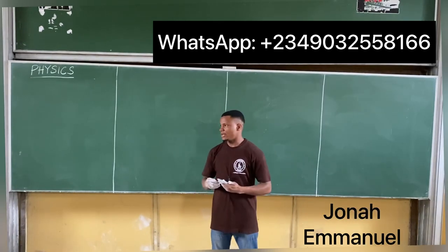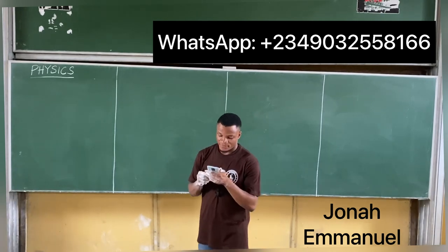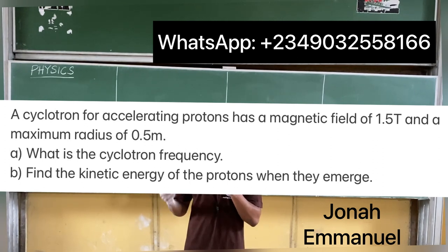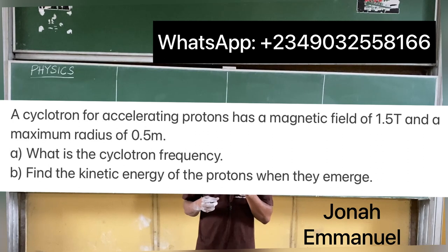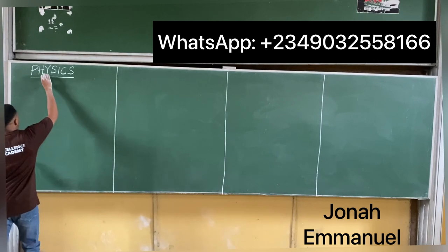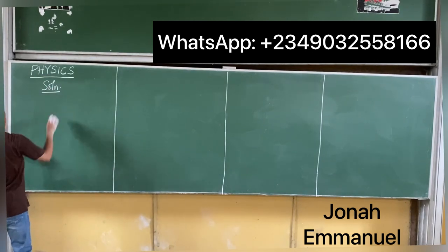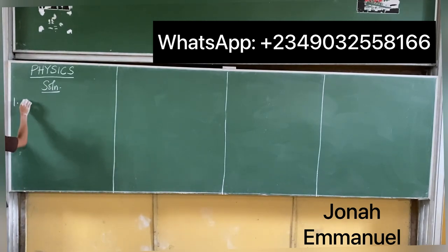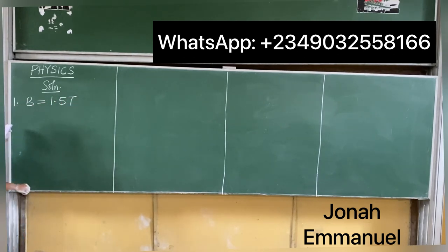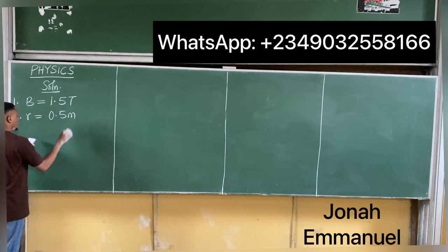Sample problem: A cyclotron for accelerating protons has a magnetic field of 1.5 Tesla and a maximum radius of 0.5 meters. Part A: what is the cyclotron frequency? Part B: find the kinetic energy of the protons as they emerge. Given: B = 1.5 T, R = 0.5 m.